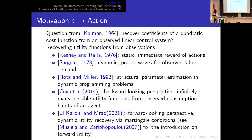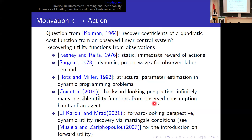This problem of trying to guess what's motivating the agent's behavior has been out there for a long time. In the control community, one of the earliest questions raised in this direction dates back to the Kalman question, where he asked whether it is possible to recover coefficients of a quadratic cost function from an observed linear control system. This is one of the earliest problems of inverse reinforcement learning ever to happen in history, and ever since then, this type of problem has been present in many different communities.